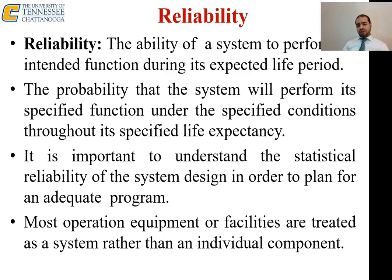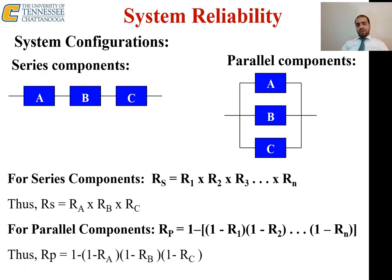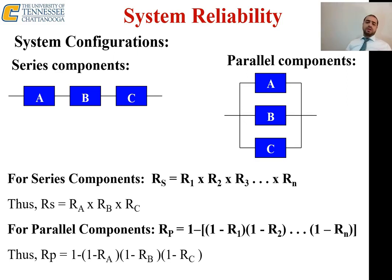Treating a system as a whole means considering how components are combined. This can be done by taking the components in series or in parallel. When you combine system components in series — for example A, B, and C — the reliability is the multiplication of each component's individual reliability.